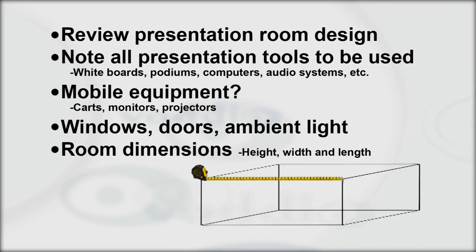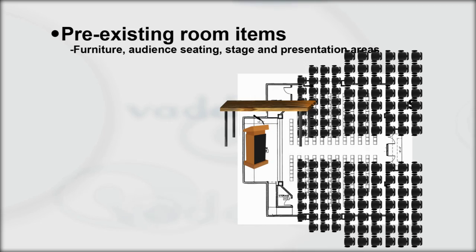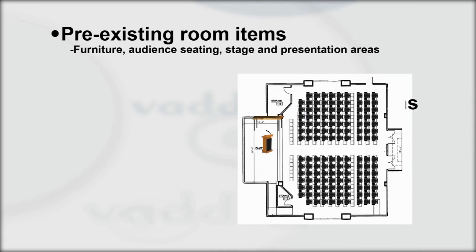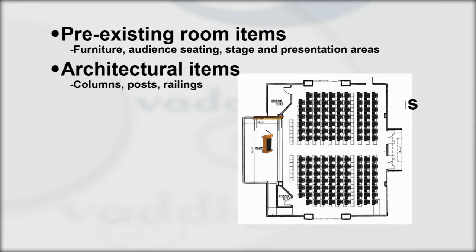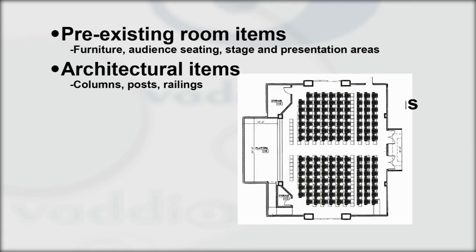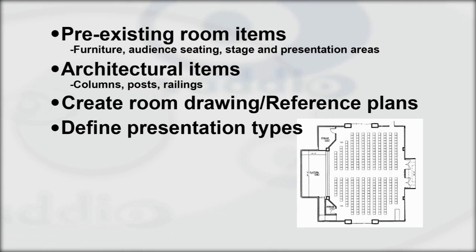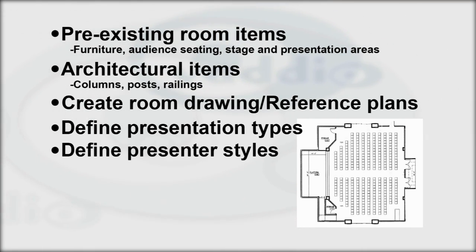Define all room dimensions — height, width, and length. Identify the locations of all pre-existing items in the room. Locate any and all other architectural items including columns, posts, and railings. Measure and create a simple room drawing or reference the existing room plans. Define the various types of presentations to be given in the room to help determine how the room will be used.